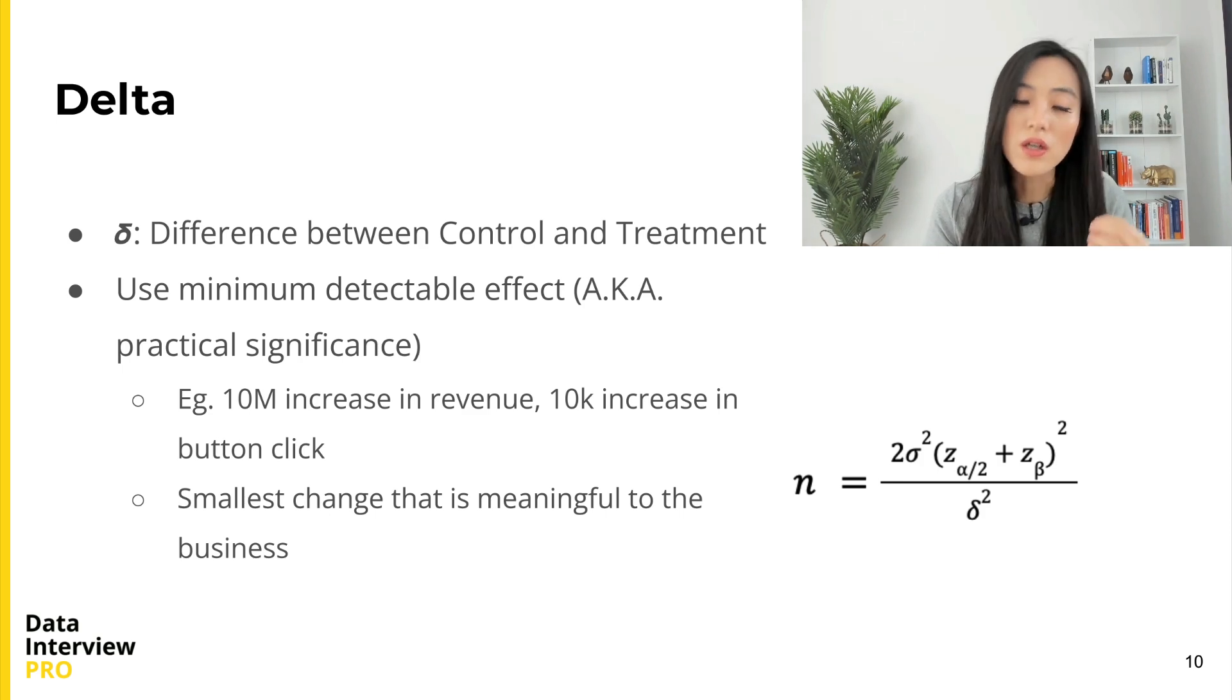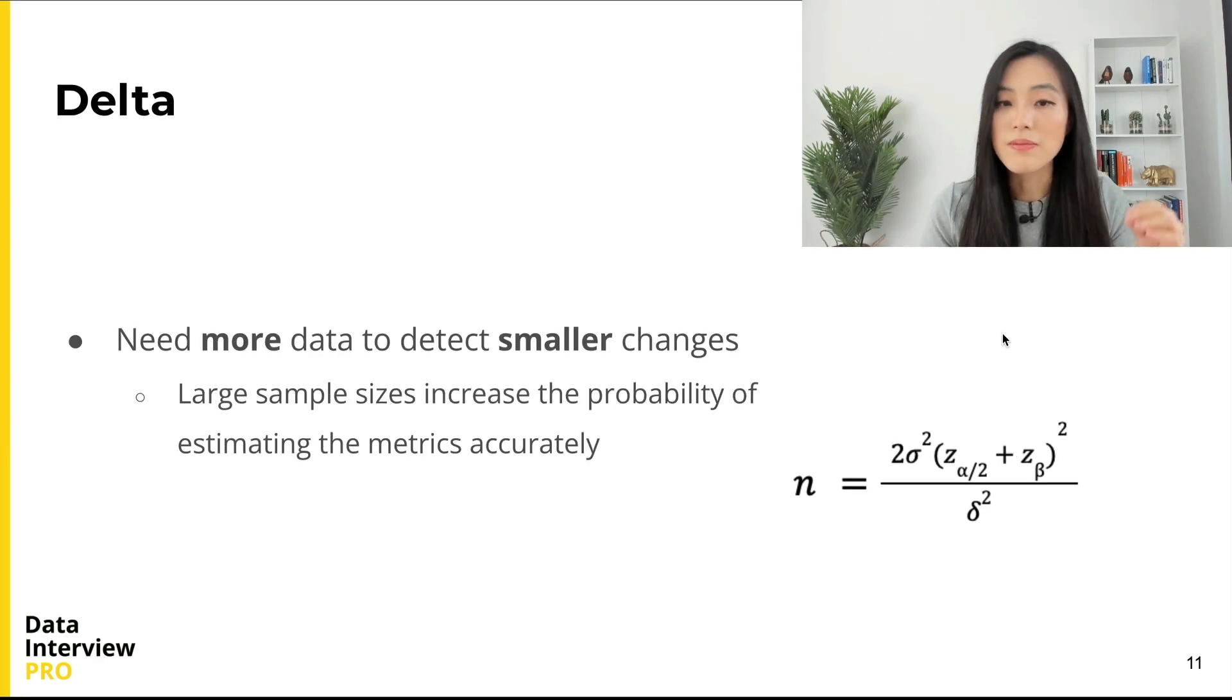Just because those values are noisy and can be impacted by many factors, we need a minimum practical difference in order to conclude there is a meaningful impact to the business. As you can tell, when δ becomes smaller, the resulting sample size will become larger.